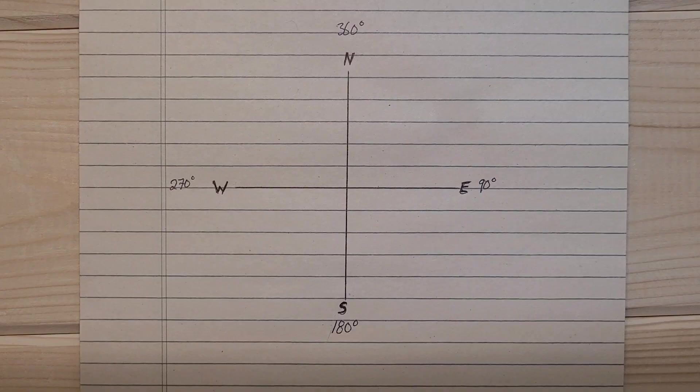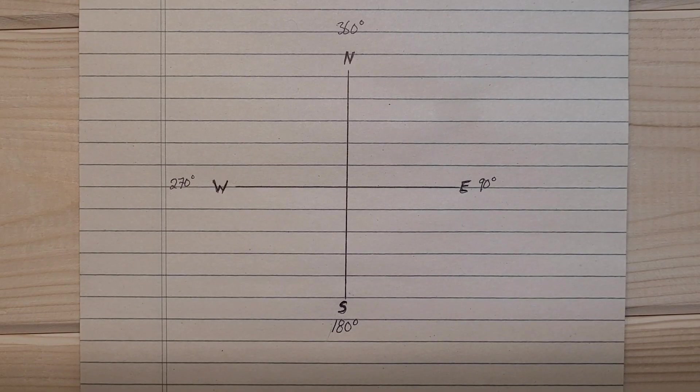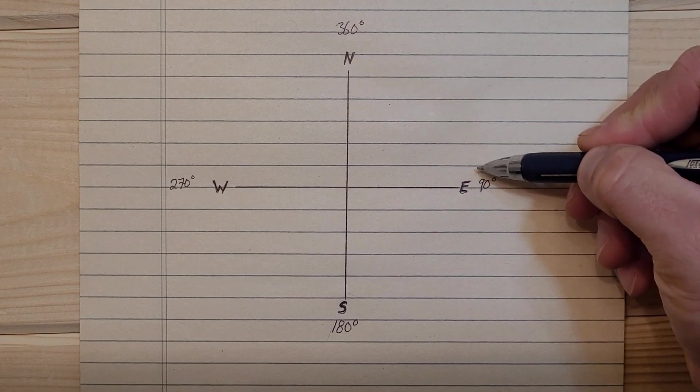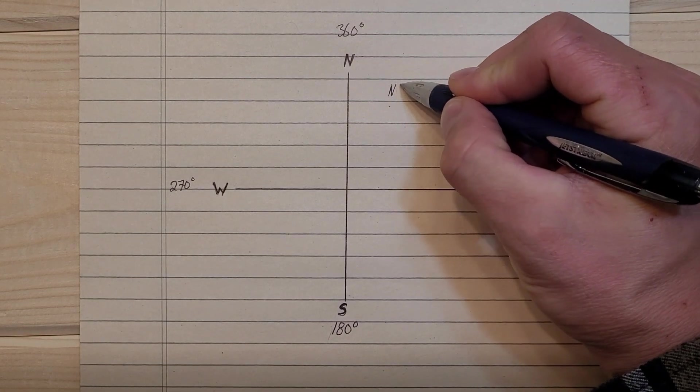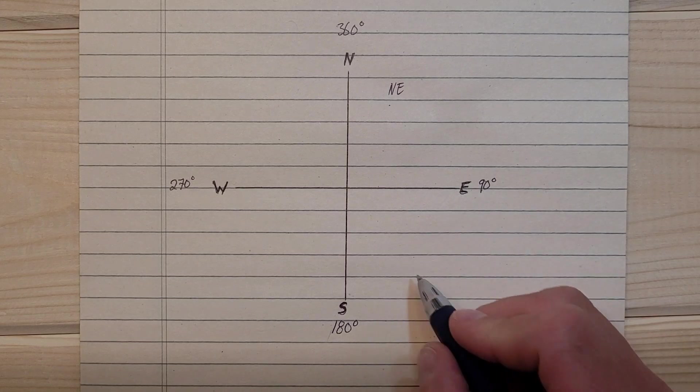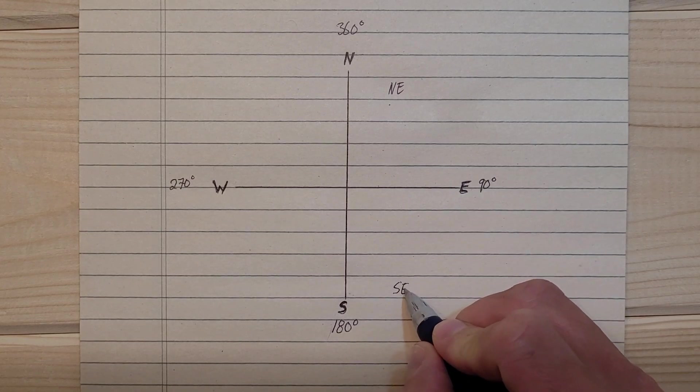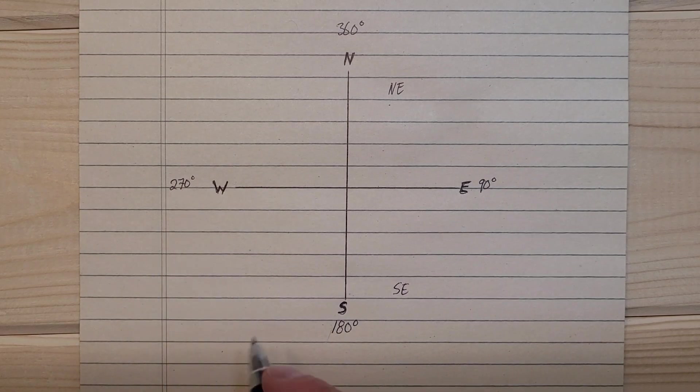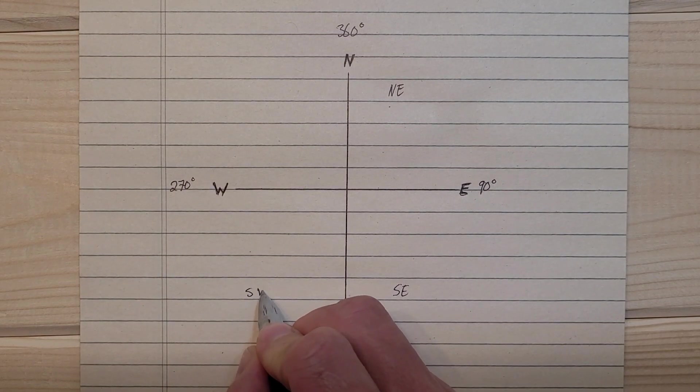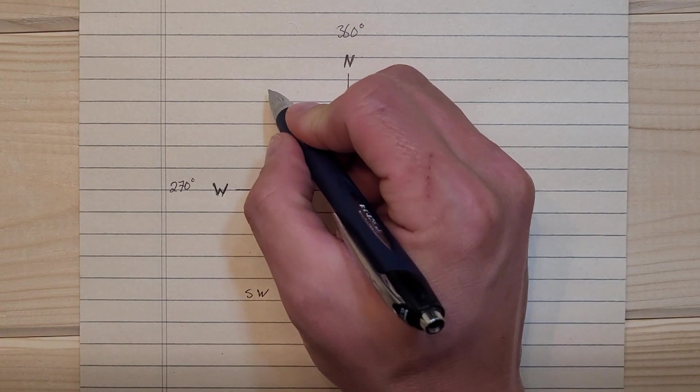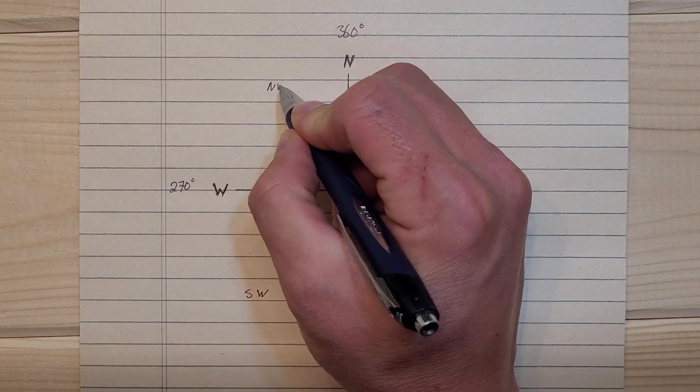Bearings are broken into quadrants, and there's four quadrants. From 0 to 90 is northeast, from 90 to 180 is southeast, from 180 to 270 is southwest, and from 270 to 360 is the northwest quadrant.